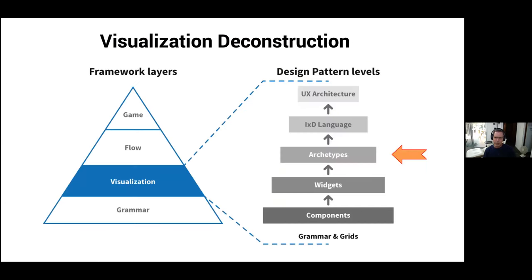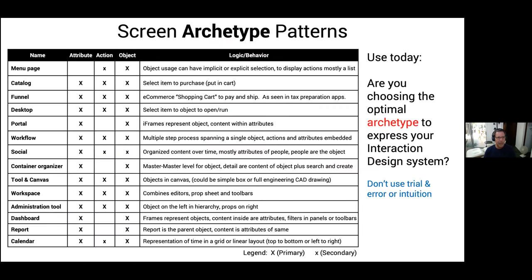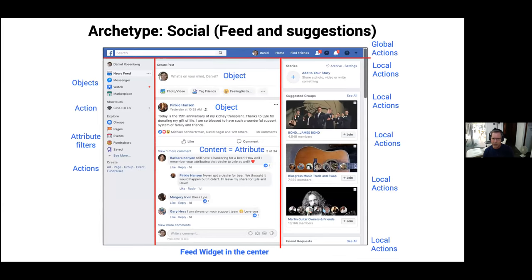When we get to visualization of archetypes — the next level up in the food chain — we have about a dozen very standard page types that users today will have a priori understanding of: what's a desktop, what's a portal, what's a menu, what's a shopping catalog, what's a social pattern like Facebook or LinkedIn. There are a variety of things these page types can indicate, and here you'd want to knock out about 70% of the X's and be very mindful: when you're using that pattern, is it a container of objects or a container of attributes?